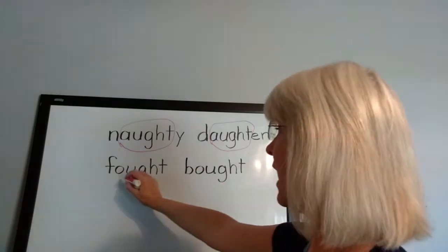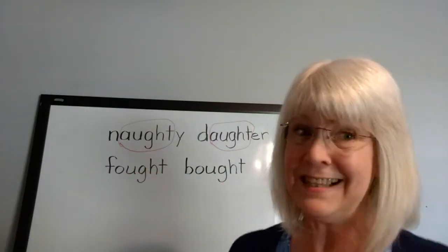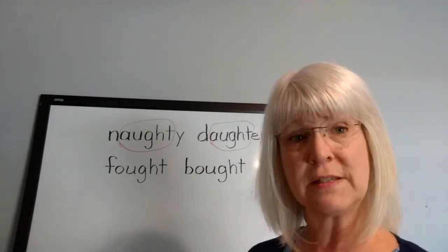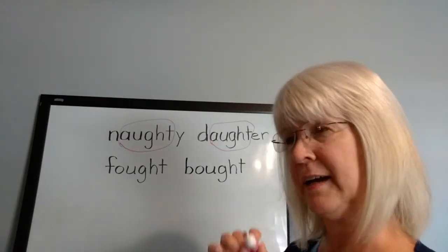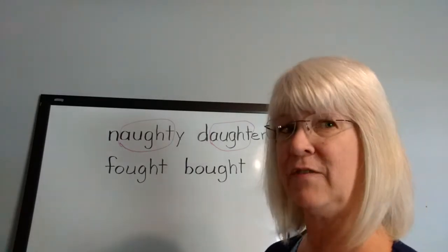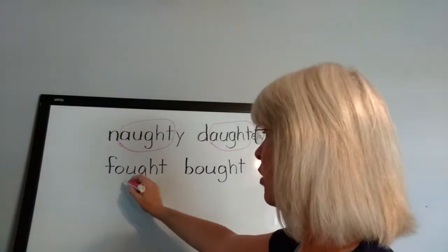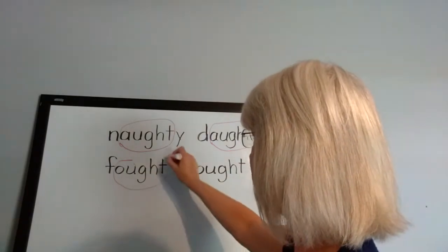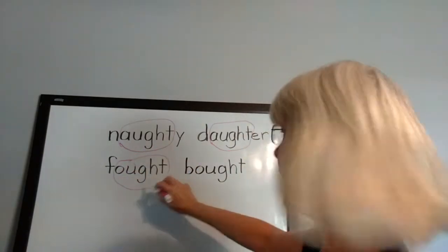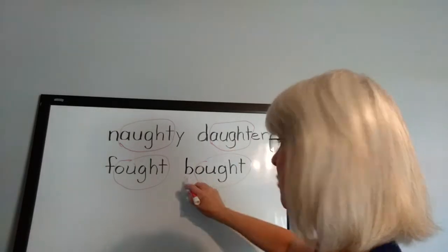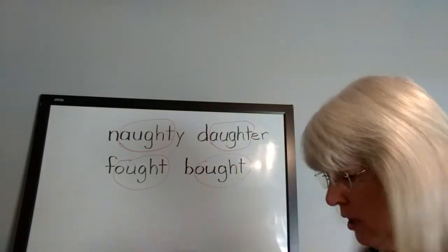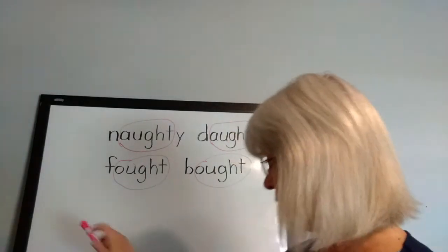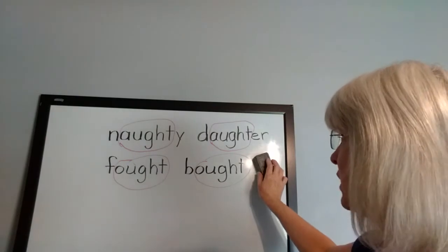Now we've got O-U-G-H-T, which sounds exactly like A-U-G-H-T. So the naughty daughter, believe it or not, is going to help us know which words have A-U-G-H-T. On O-U-G-H-T, remember we're not going to circle O-U — we're going to circle O-U-G-H-T. So what's that word? Fought — O-U-G-H-T. And what's that word? Bought. Oh, they rhyme — fought and bought. And we are going to now just concentrate on the naughty daughter.